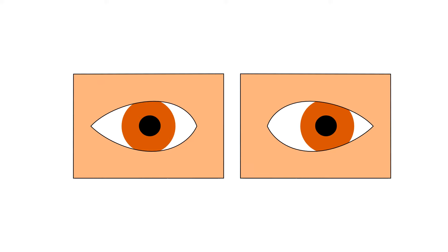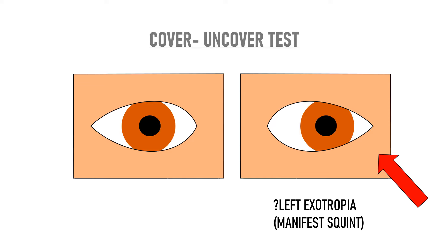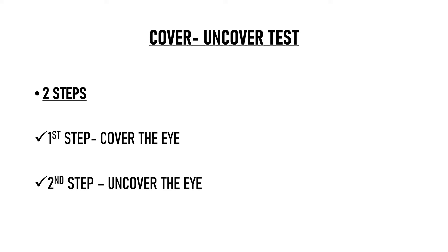First, we will discuss the cover-uncover test. The cover-uncover test is done in two steps. In the first step, we cover the eye, and in the second step, we uncover the eye. We cover the apparently normal eye — also called the apparently non-deviating eye or apparently fixating eye. These terms all mean the same thing.